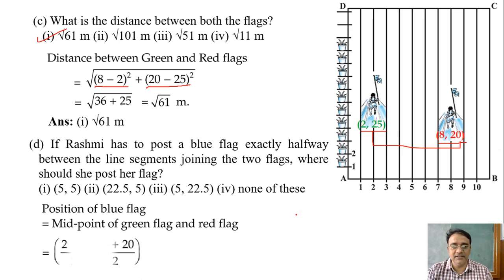So 2 plus 8 by 2, 25 plus 20 by 2. So what you will get here? 10 by 2 will get 5, and here 22.5. So we will get 5, 22.5. So which option is the correct one? Option 3.